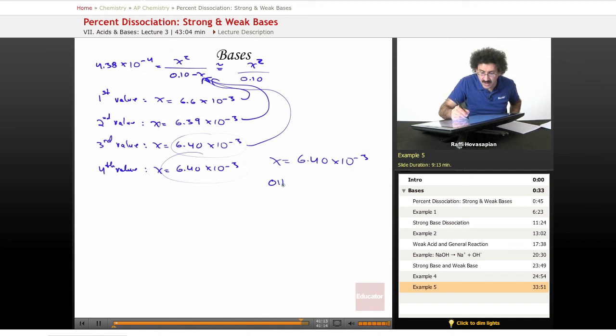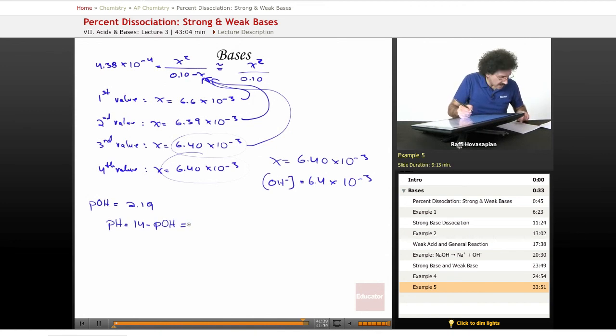x equals 6.40 times 10 to the negative 3. x happens to be my hydroxide ion concentration of 6.4 times 10 to the negative 3. And the pOH, which is the negative log of the 6.4 times 10 to the negative 3, gives me 2.19. And then pH is equal to 14 minus pOH. I end up with 11.8. That is my basic solution.